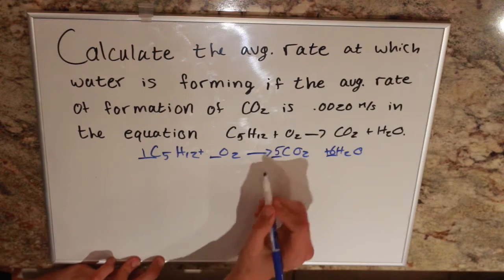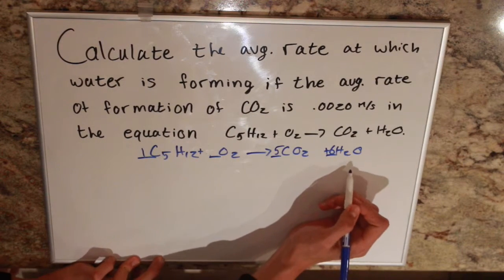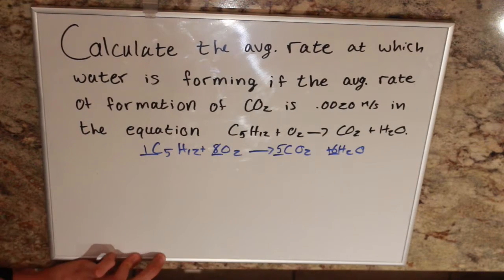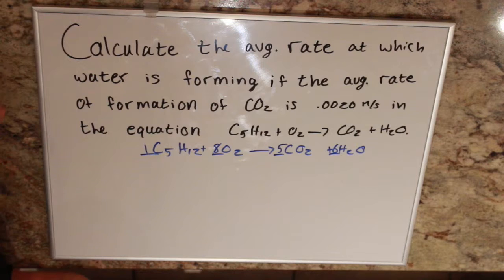Now we just need to balance our oxygens. We have 10 oxygens here, 6 oxygens here, 16 total. We have 2 on this side, so we put an 8 in front of that. Now we have a balanced expression.